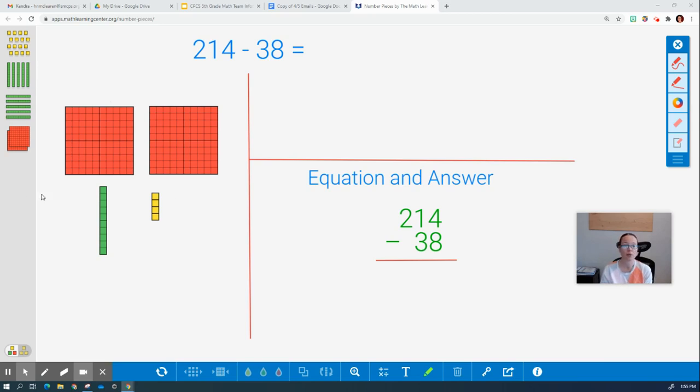We're going to start by pulling out our 200s blocks, one 10 stick, and four ones to represent our 214.